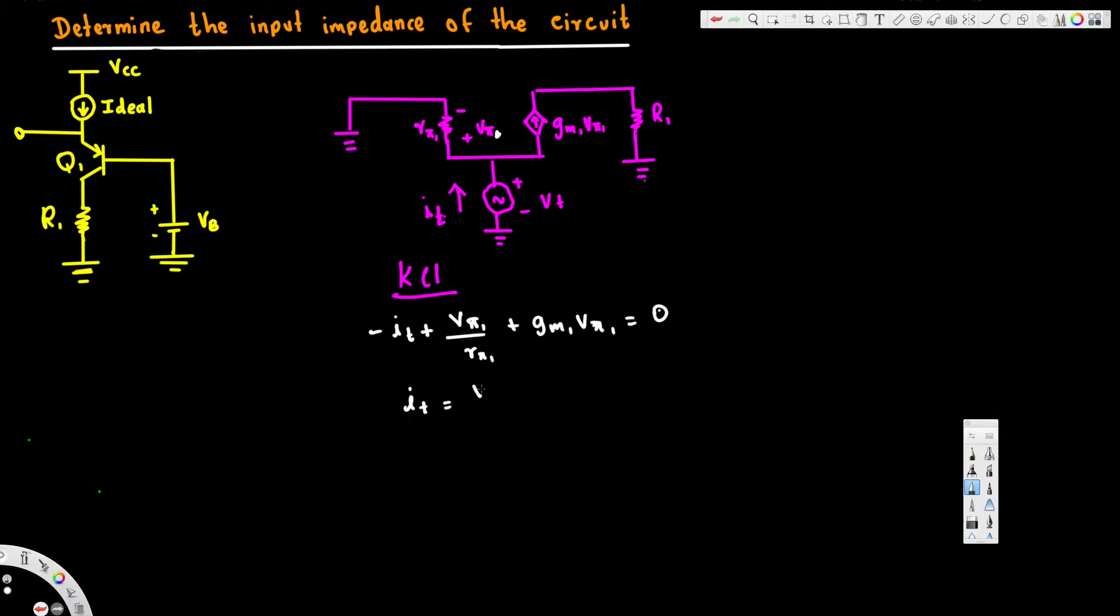All together it's equal to zero. And if we write this one in terms of it, this is going to be: it is equal to v51 over r51 plus gm1 times v51. And then v51 is equivalent to vt. That's equation 2.